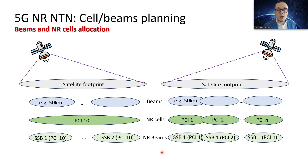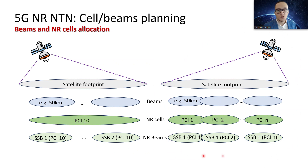If we need more capacity and handovers are acceptable with not so many users, for example, we could use Option B. Or we could use Option A with that type of allocation between NR cells, satellite beams, and NR beams depending on the use case.